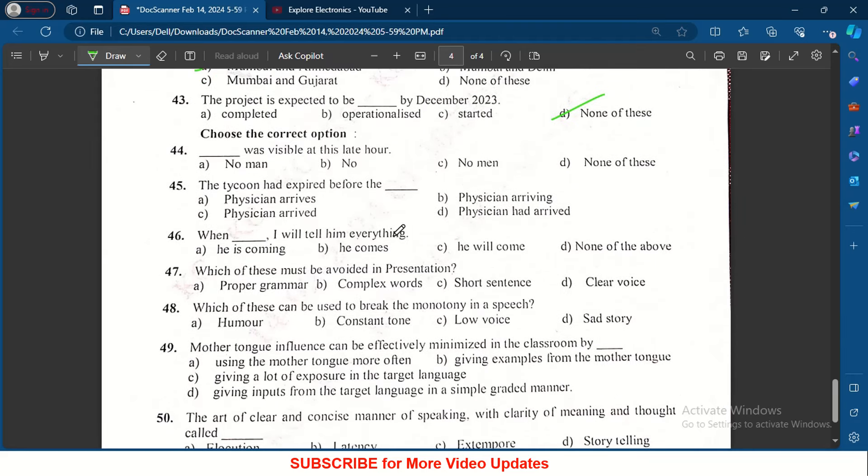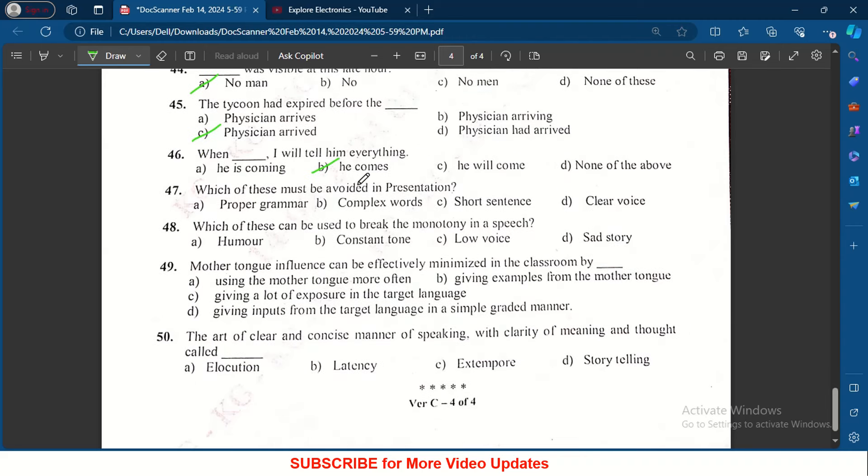Choose the correct option: dash was visible at the at this later - no man. The tycoon has expired before the physician arrives - arrived. When dash I will tell him everything - when he comes.